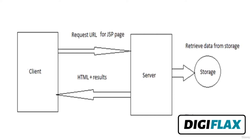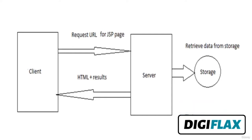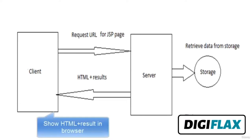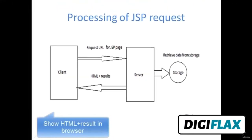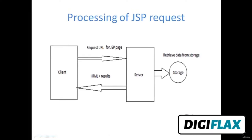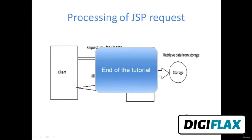After getting the file from storage, the server executes the embedded Java code in the HTML page and sends those results and HTML to the client. The client will then show it in the browser. In the next tutorial, we are going to see how to set up the environment for JSP.